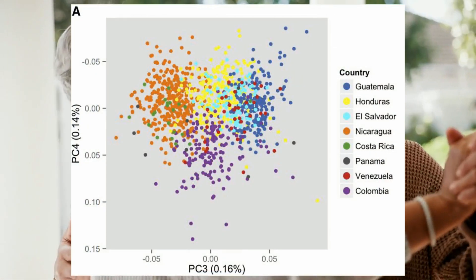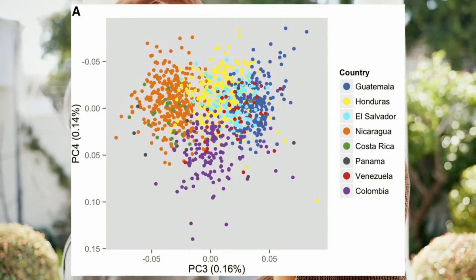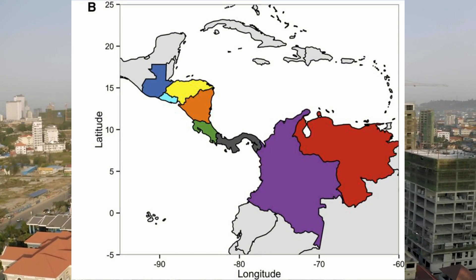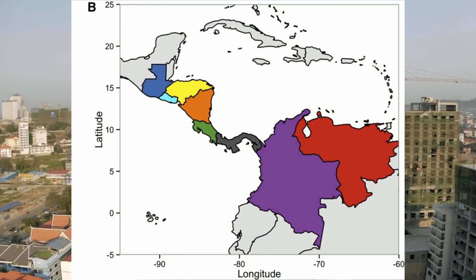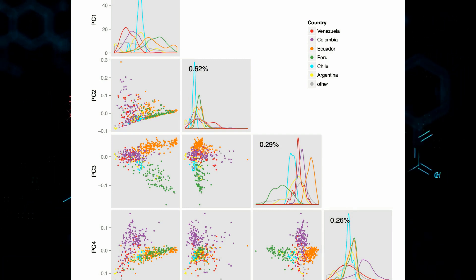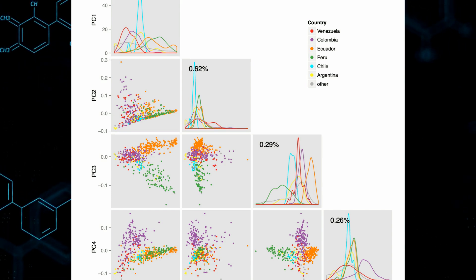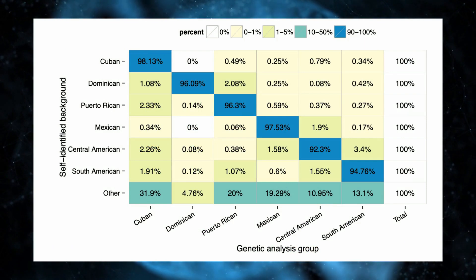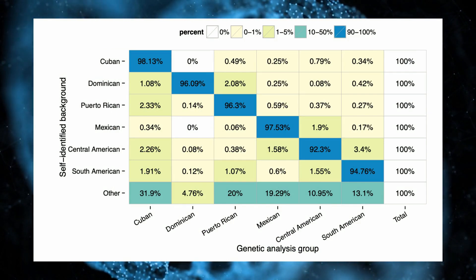The genetic differences among people within a specific Hispanic or Latino background group are related to where their grandparents came from. For example, people whose grandparents are from Colombia and Venezuela tend to be more genetically similar to those from Central America than to those from other South American countries. To keep the study manageable, the researchers grouped people into broad categories like Central or South American, rather than creating many small groups.